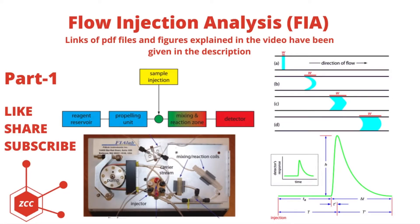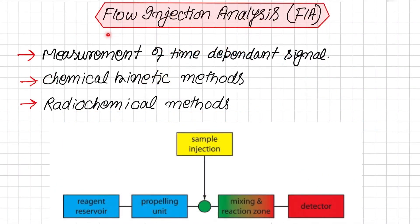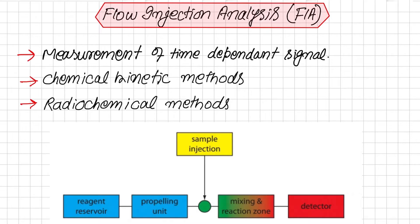Today's lecture is about Flow Injection Analysis (FIA). The flow injection analysis is used in methods where we measure a time-dependent signal. In chemistry, there are two types of time-dependent signals most commonly used: chemical kinetic methods and radiochemical methods. In this technique, we inject the sample into a flowing carrier stream, which gives rise to a transient signal at a detector. The shape of this transient signal depends on the physical and chemical kinetic processes occurring in the carrier stream during the time between injection and detection.